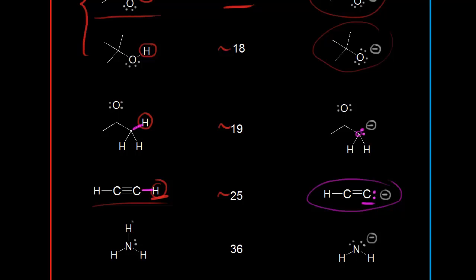For ammonia, if a base took that proton, these electrons would come off onto the nitrogen, giving us our conjugate base, with a pKa value of approximately 36. This is another compound you see a lot of different pKa values for — I've seen 33, I've seen 38 — so use whatever pKa values you are given in your class.